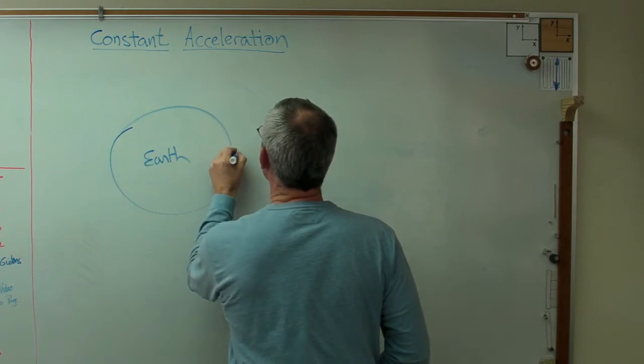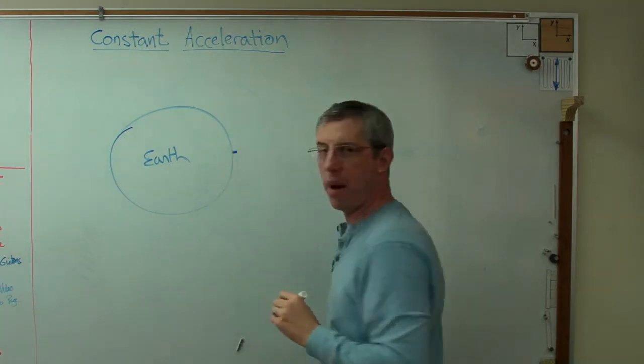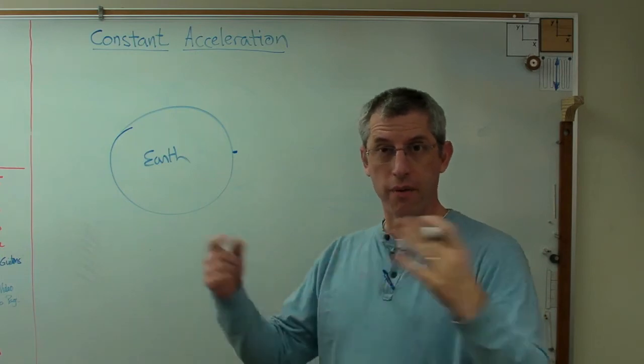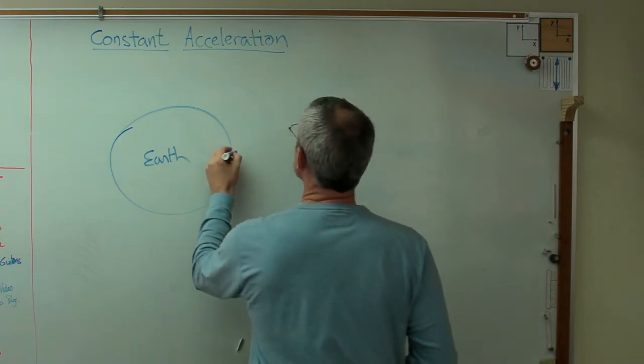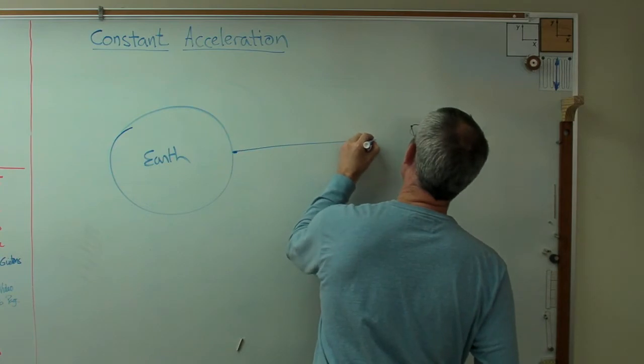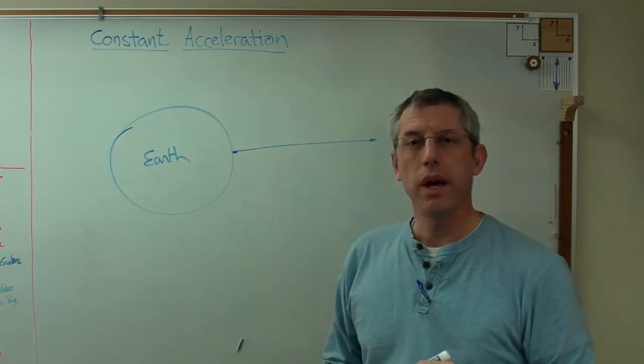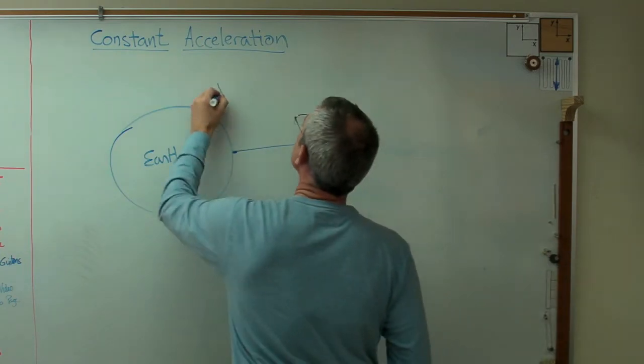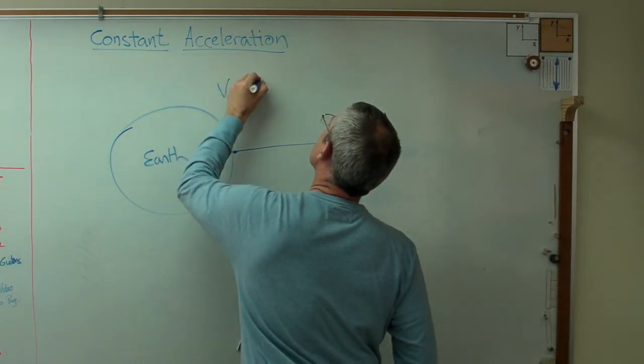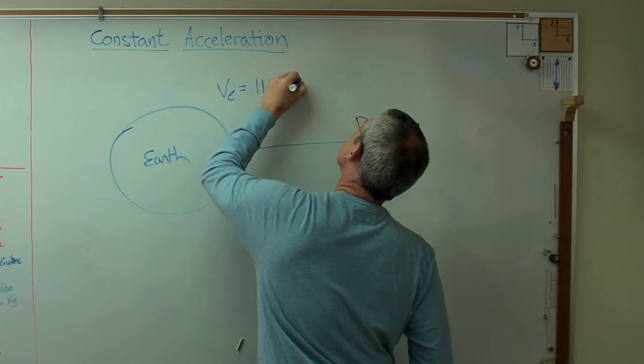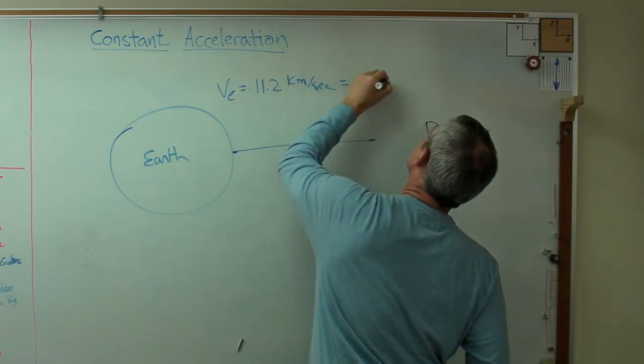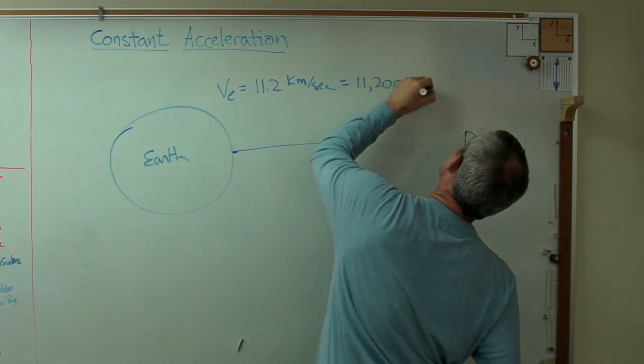And let's say we have a rocket that's going to launch from that point right there and we want to escape the gravitational field of the Earth forever. So I want the rocket to go straight out from the Earth and I want it to reach escape velocity. Escape velocity for the Earth is 11.2 kilometers per second and that's equal to 11,200 meters per second.